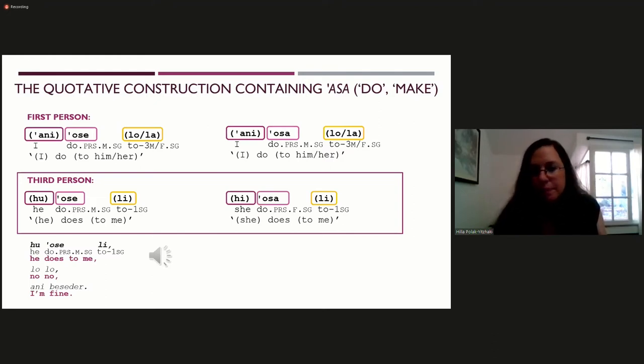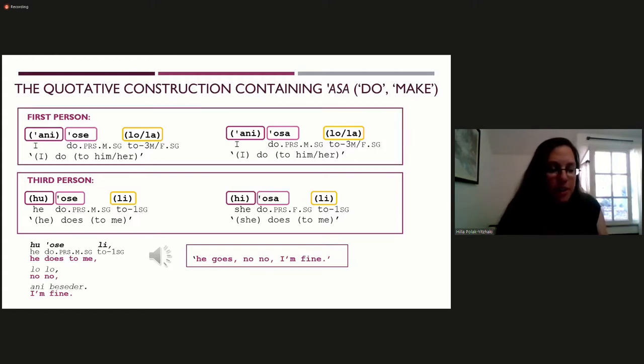As in the following example: uoseli, lolohan, ibseder, which is he does to me, no, no, I'm fine, which may be translated into English as he goes, no, no, I'm fine. And no, no, I'm fine is the constructed dialogue here. There are also a few tokens in first person.